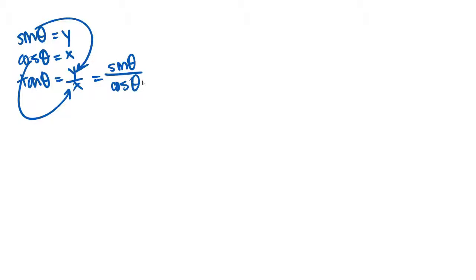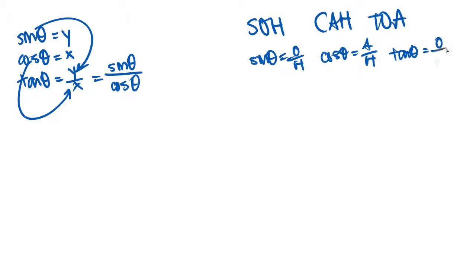Okay, now onwards to the reciprocal functions. So if we have the SOHCAHTOA thing, sine theta is opposite over hypotenuse, right? Cosine theta is adjacent over hypotenuse, and tangent theta is opposite over adjacent.